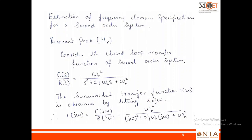Now we will look at the derivations and formulas for various frequency domain specifications, considering a second order system. This is the transfer function of a standard second order system. As per the definition of resonant peak, resonant peak is the maximum value of this transfer function. We are going to calculate the maximum value of this function, so let me replace all s with jω. We define T(jω) = C(jω)/R(jω), and our objective is to find the maximum value of the magnitude of T(jω).